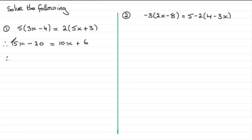So we'll have 15x take away 10x which is going to leave me with 5x and then we've got the minus 20 equals and we're left with the 6 here when we take 10x away from this side.